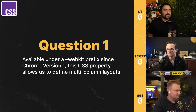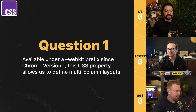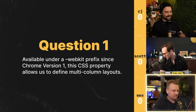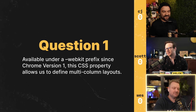Available under a dash WebKit prefix since Chrome version one, this CSS property allows us to define multi-column layouts. Wes buzzed in. His answer: WebKit columns — and yes, that's accepted.